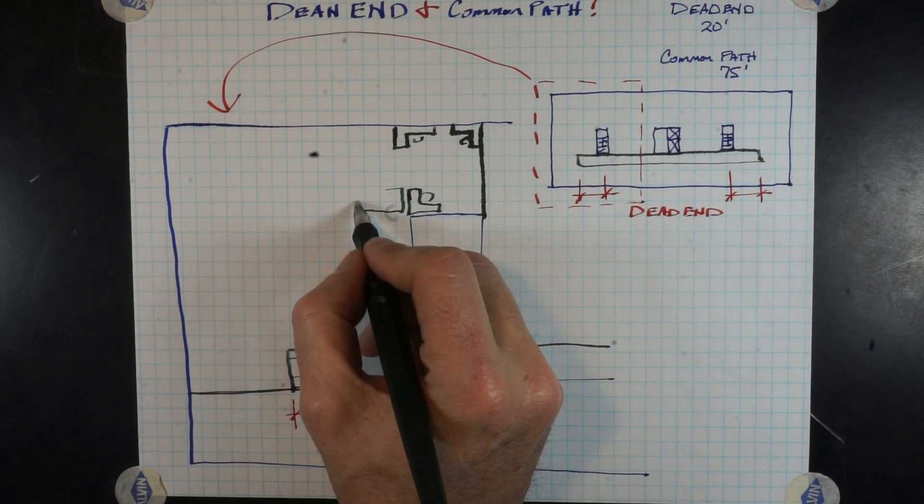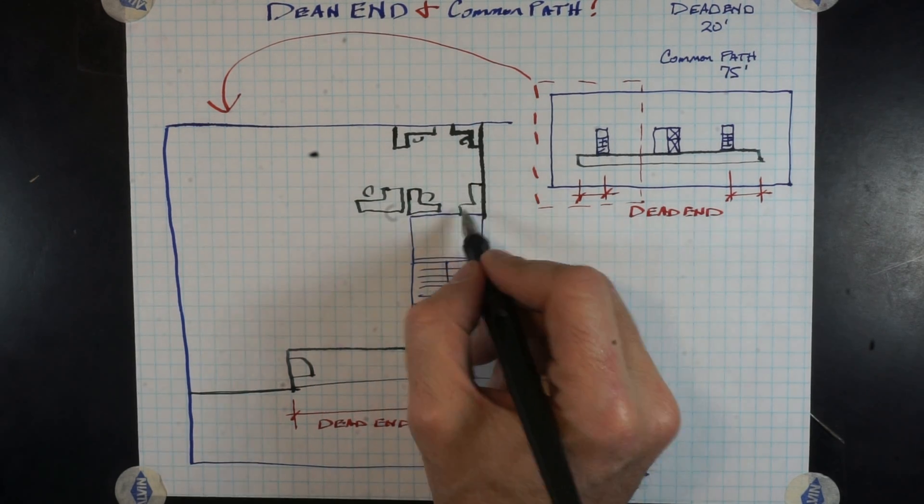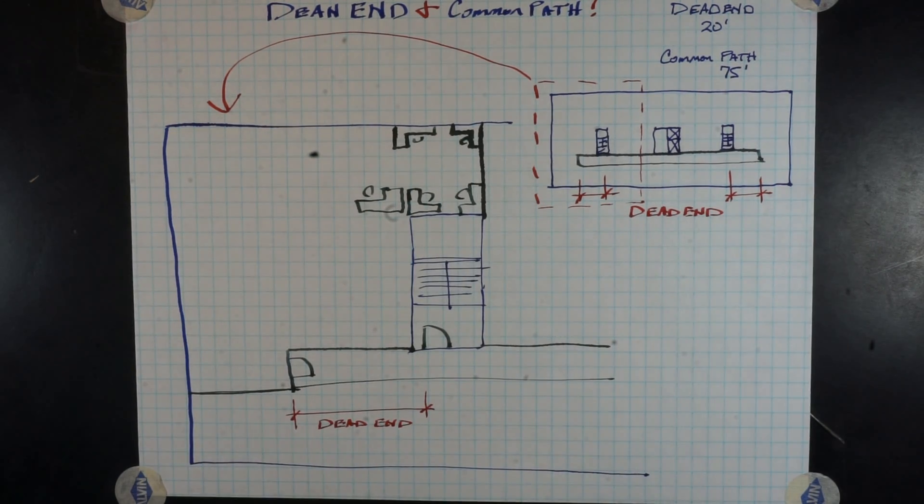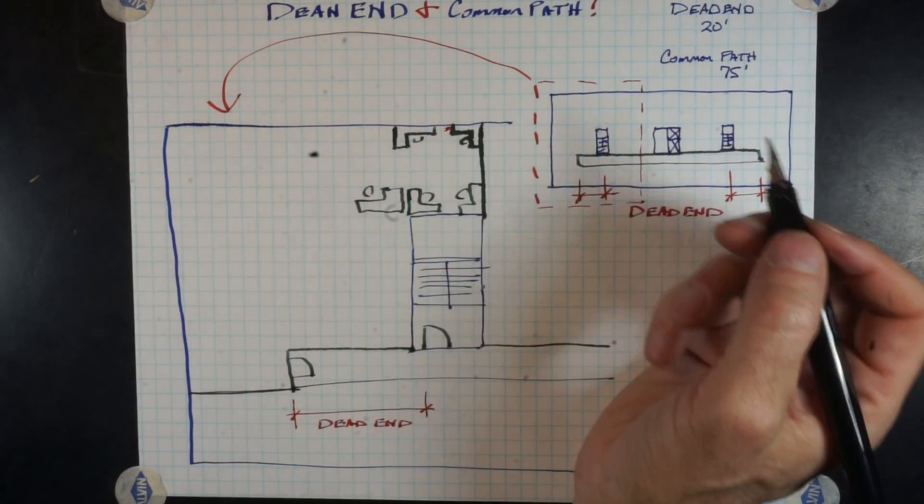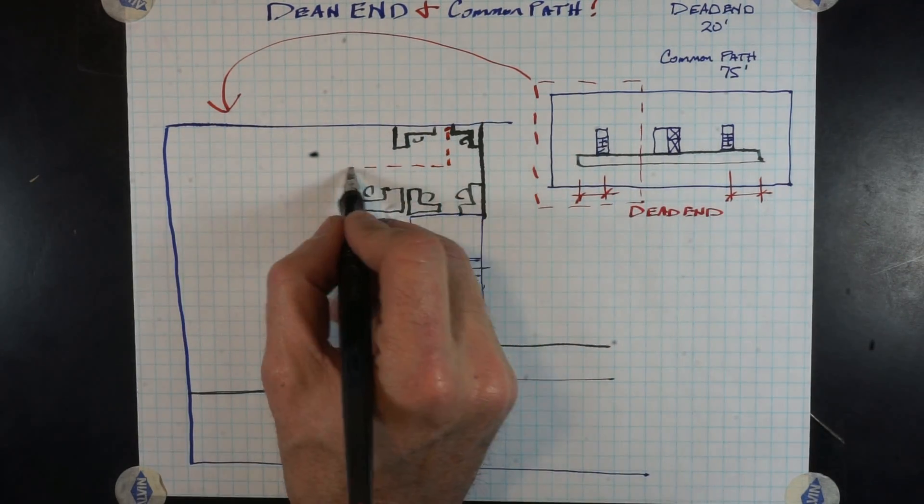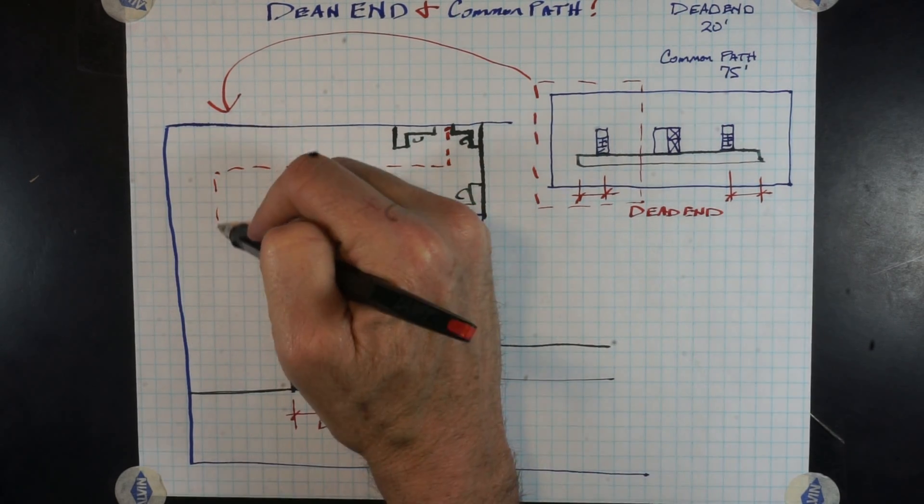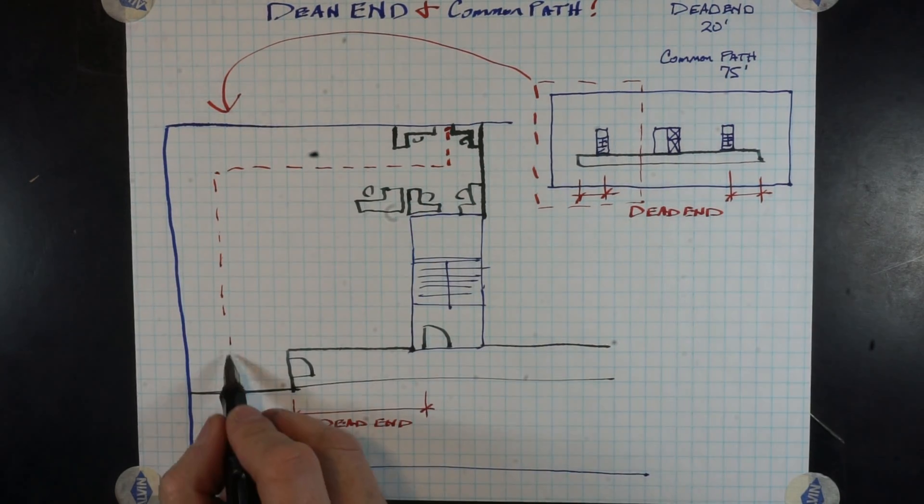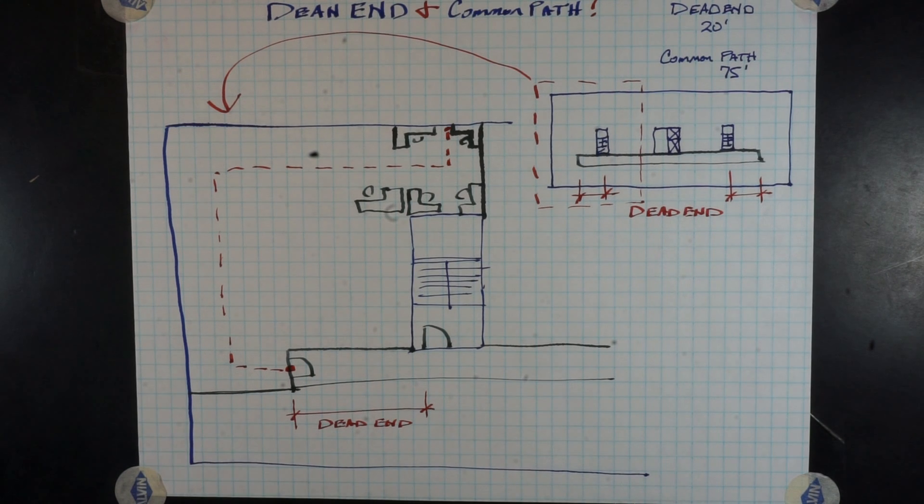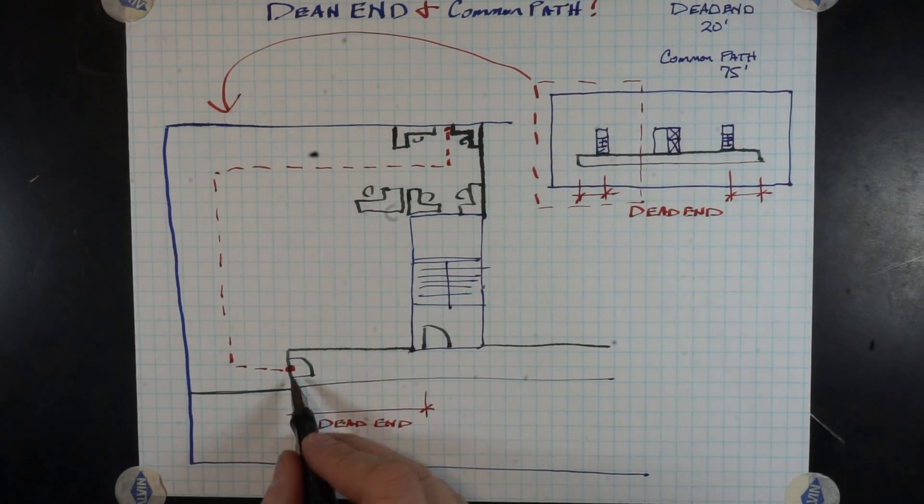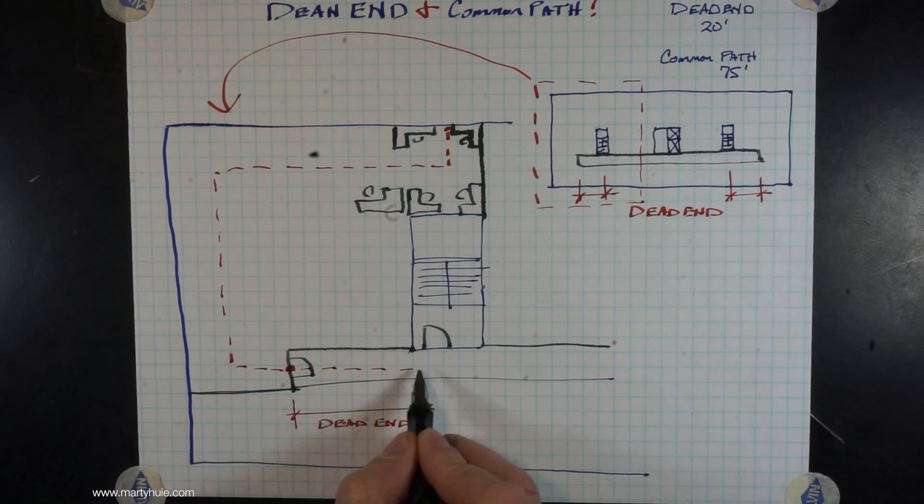So you get the idea here. Starting here, following our path to the door and understanding all the way through, we've got office furniture laid out here. We get to the door and that is not our common path of travel distance, not the total distance.